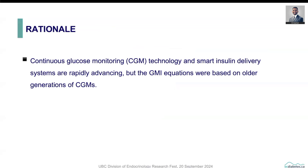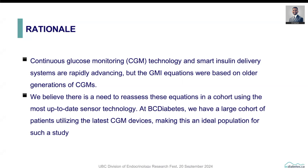The rationale of our analysis is that continuous glucose monitoring is rapidly advancing, especially with the integration with automated insulin delivery systems. As a result, we are seeing more people who have tighter glycemic control, and this particular group of patients is reporting the discrepancy between their A1C and GMI. At BC Diabetes, more than 6,000 patients have used CGM over the past three years, providing an ideal opportunity to re-examine the relationship between A1C and GMI.